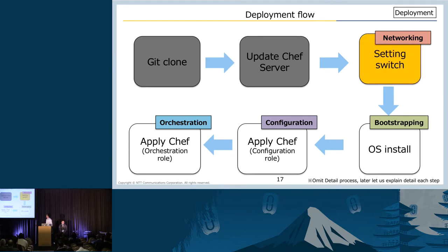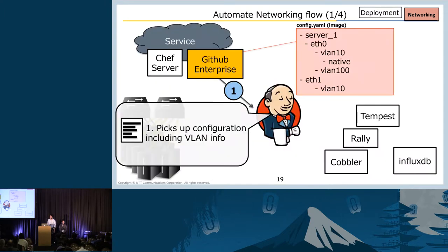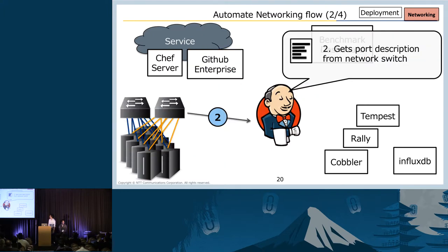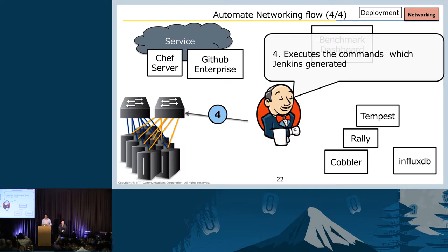I will explain from the networking step. Networking automation is auto-VLAN setup. Our current approach requires two things: defining server pod name and setting an appropriate switch port description. The only other thing you need is to write a configuration file including your ideal network layout. First, Jenkins picks up configuration including VLAN information from GitHub. Then Jenkins gets port description from the network switch. After that, Jenkins generates switch configuration based on network layout and target server settings. Finally, Jenkins executes the command, and auto network settings is finished.